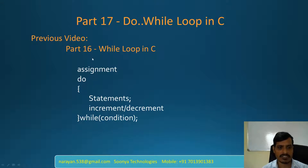Here is the syntax for the do-while loop. The first step is assignment. Later we have the do block. The do block contains statements which will execute. Later the variable will be incremented or decremented. Then we have while and check the condition. If the condition is true, then re-execute the do block. If the condition is false, it will exit from the do-while loop.